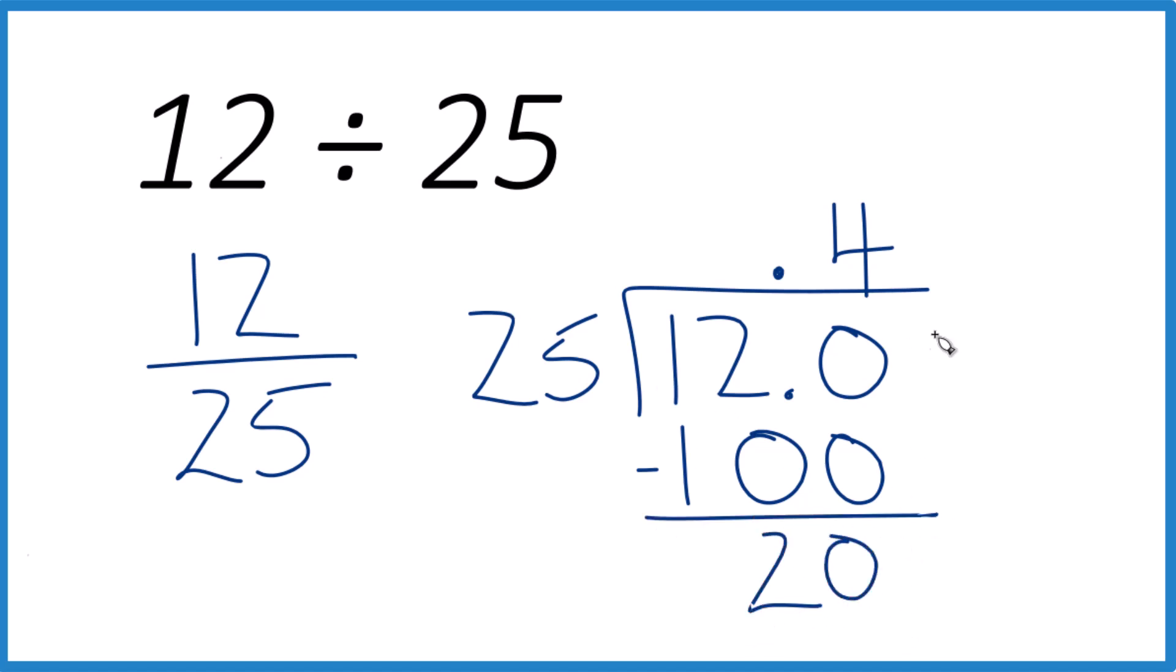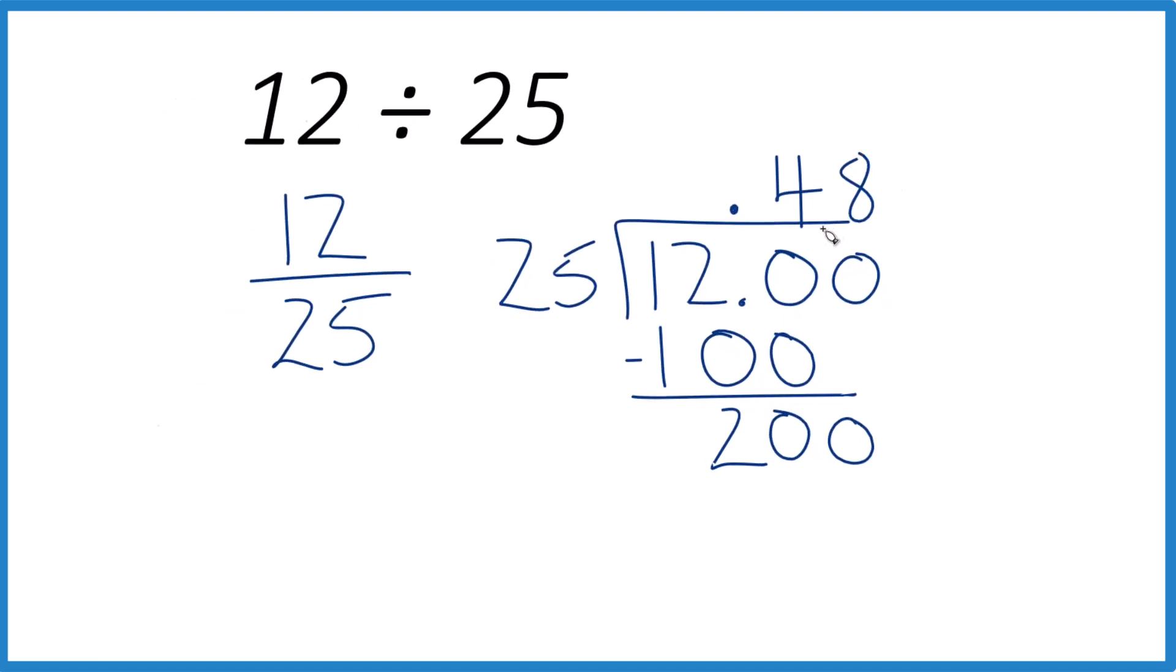25 doesn't go into 20, but 12.00, that's the same as 12. Move over one, and I could bring this zero down, and now 25 goes into 100 four times, so it goes into 200 eight times, and eight times 25 is 200.